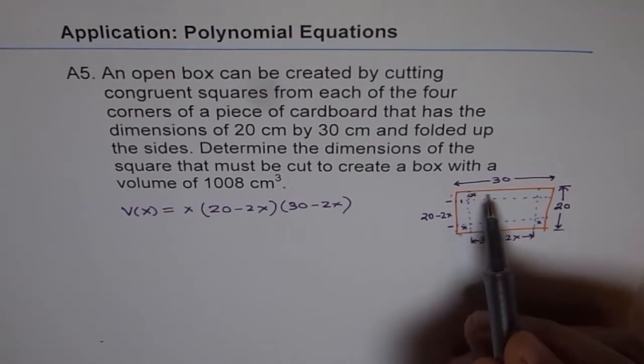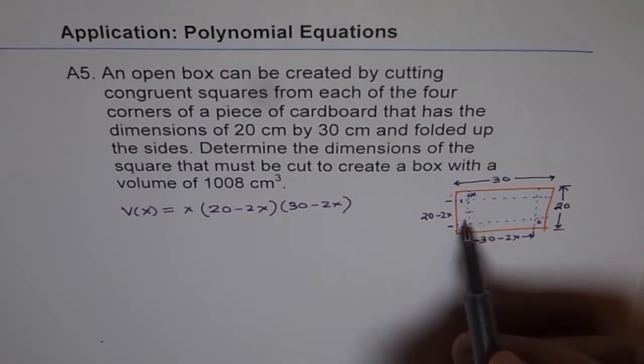Well, think like this. If you are cutting a box like this, x is like, let's say 5, and then it is 10, it cannot be beyond 10, right? Because 10 is midway. That is one way of looking into it.